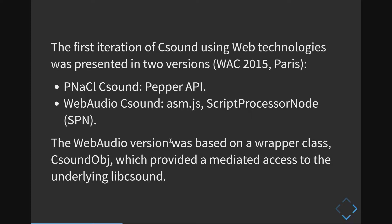The first iteration of CSound using web technologies was presented in two versions at the first Web Audio Conference in 2015. The first version was PNaCl, or Portable Native Client CSound. This was not using open web standards — it was using the Google-specific Pepper API, and we were using that to communicate to the sound card. With Portable Native Client, you would use your C and C++ code, compile it to a Portable Native Client module, load that, and then run it in the browser.